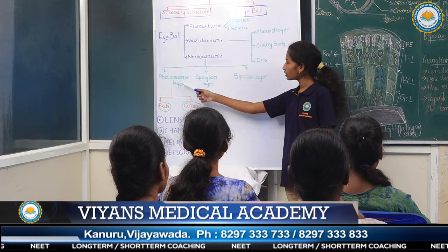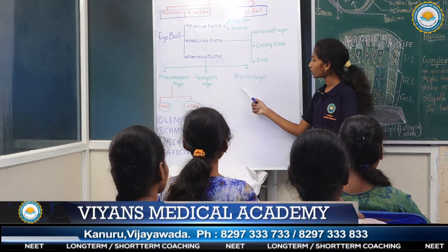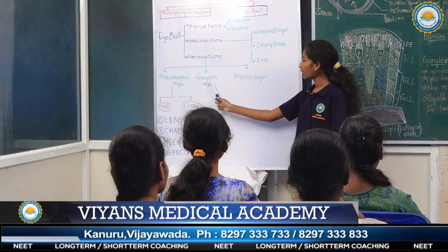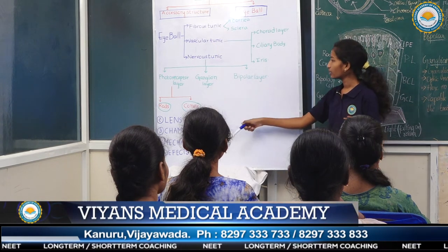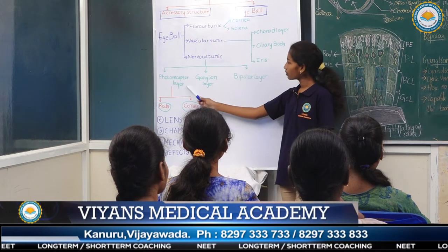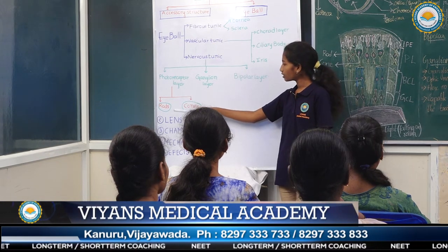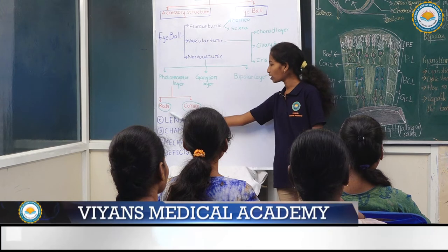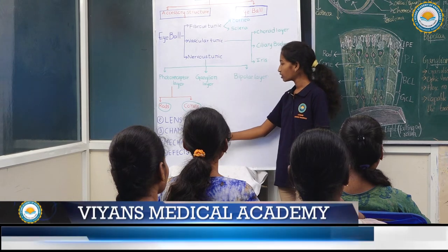The retina is divided into three major layers: the photoreceptor layer, ganglion cell layer, and bipolar layer. The photoreceptor layer is further divided into two parts: rods and cones.